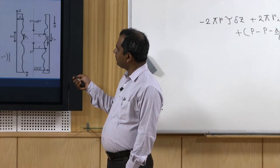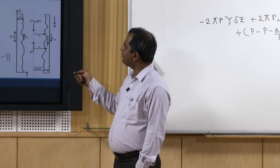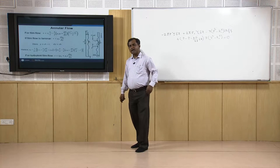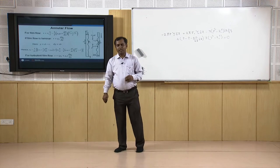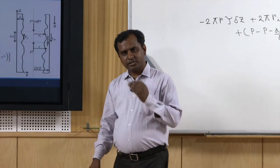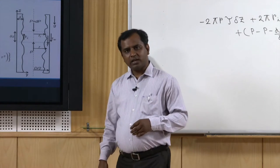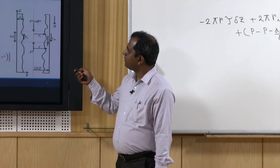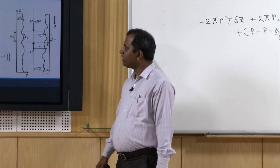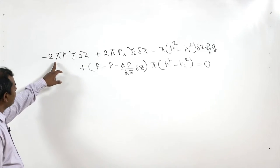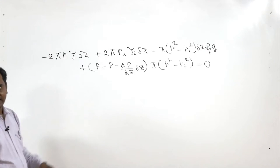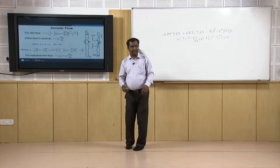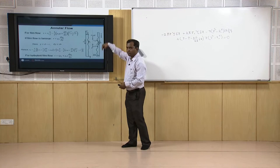If we think about this fluid element, it is having pressure from the bottom as p, and from the top it is p plus dp. This element length we have considered as delta z. Now if we try to have a force balance, we are having the shear stress at the interface, the shear stress at the outer layer of this fluid element, as well as the weight of the fluid element acting in the downward direction. Apart from that, we also have pressure forces p plus dp and p.